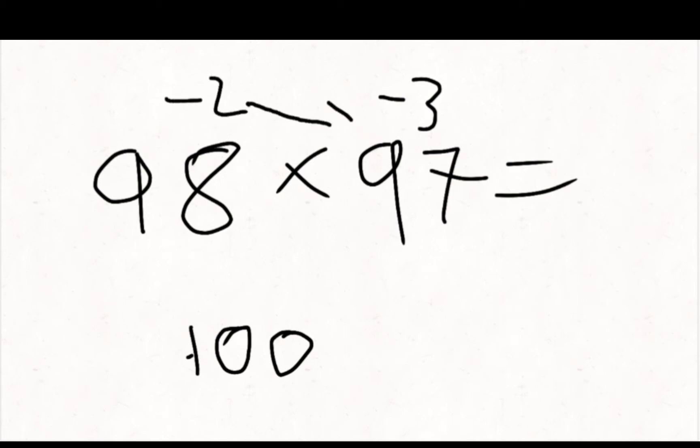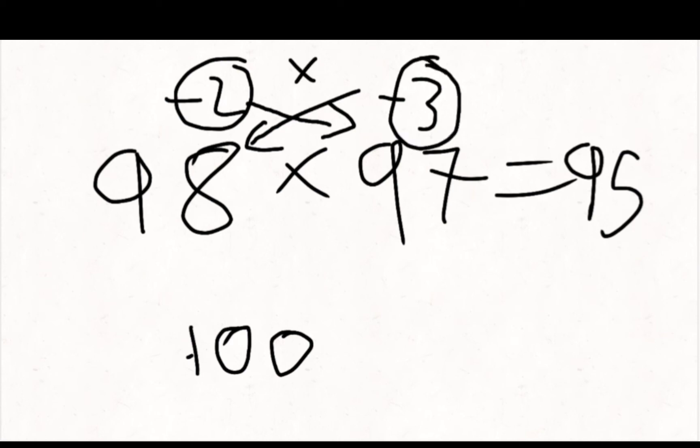No, basically all you need to do is minus them by that and minus that by that. 3 minus 8 equals 95, and so does 2 minus 97. And to get the other two digits, you need to do 2 times 3, that equals 06. That's how you do it. That was an easy method.